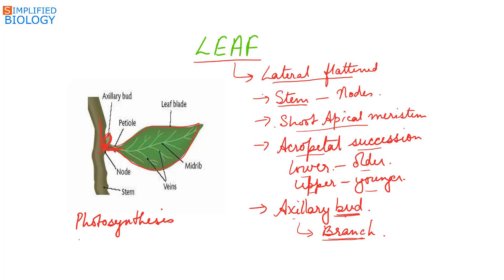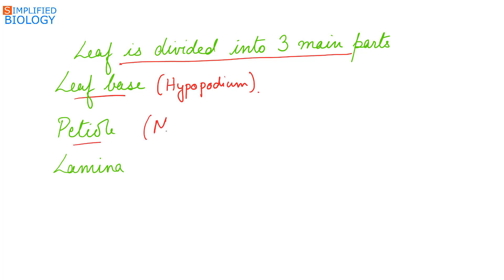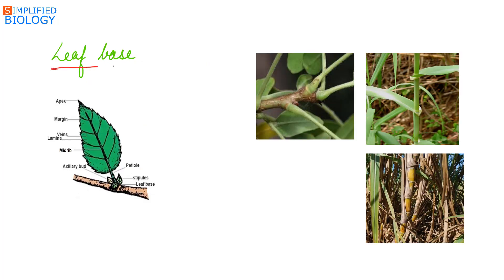Functions of the leaf: it takes part in photosynthesis, the process by which food is synthesized, and also takes part in transpiration. Leaf can be divided into three parts: leaf base (the region by which the leaf gets attached to the stem, also referred to as hypopodium), petiole (the mesopodium, which is the stalk of the leaf), and lamina (the upper expanded part of the leaf, also referred to as epipodium).